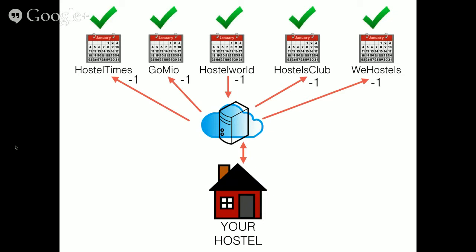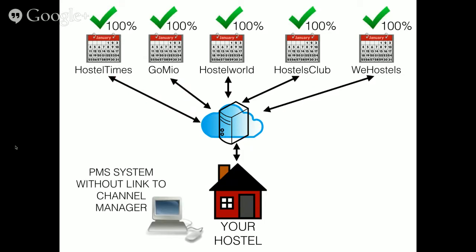Now there are some other variations of this. What I've talked about now is something you could use even if you have pen and paper at your hostel, because you would log into the channel manager to update your calendar — it enables you to go to one place on the web and put your inventory of beds, and then everything else is handled in the background automatically. A PMS system — a property management system — is designed to keep track of who's in what bed, what reservations are coming on a particular day, keeps track of transactions and money in and out of your hostel for check-ins and check-outs.